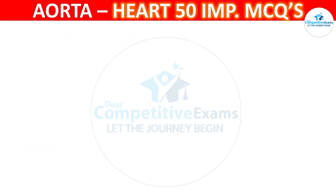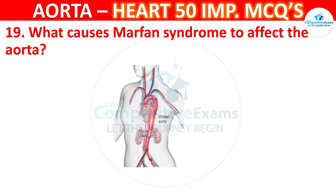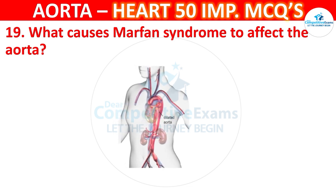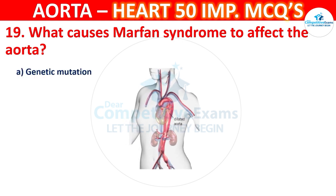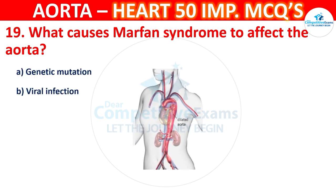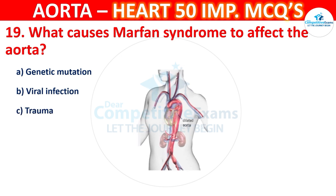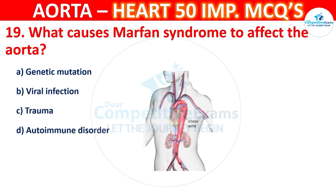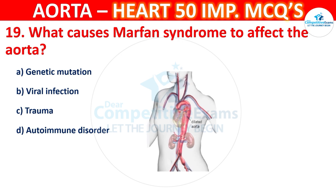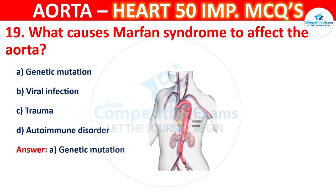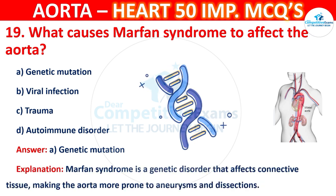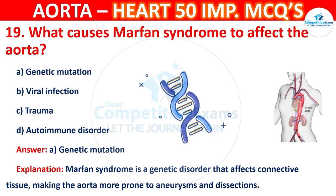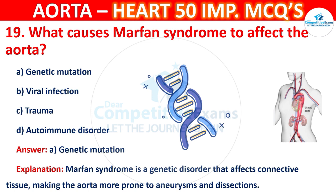Question number 19: What causes Marfan syndrome to affect the aorta? Options are genetic mutation, viral infection, trauma, or autoimmune disorder. The correct answer is A — genetic mutation. Marfan syndrome is a genetic disorder that affects connective tissues, making the aorta more prone to aneurysms and dissections.